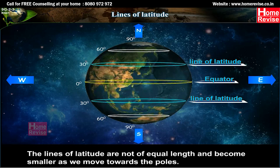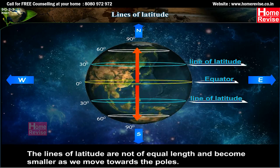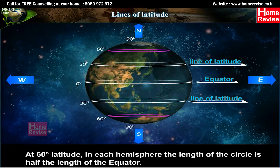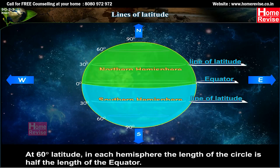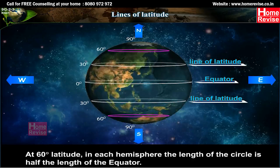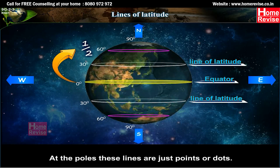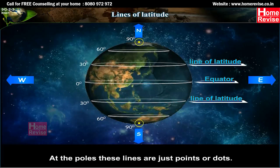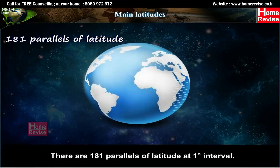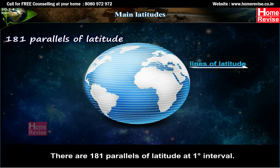The lines of latitude are not of equal length and become smaller as we move towards the poles. At 60 degrees latitude in each hemisphere, the length of the circle is half the length of the equator. At the poles, these lines are just points or dots. There are 181 parallels of latitude at one-degree intervals.